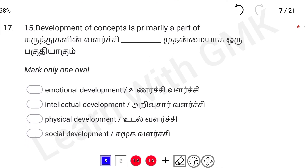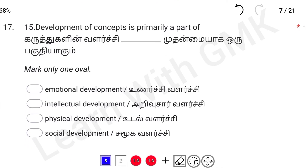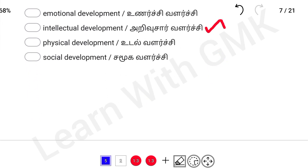Development of concept is primarily a part of what type of development? Concepts are part of cognitive processing. The answer is intellectual or cognitive development. Option B is cognitive development — our brain processes concepts, so this relates to intellectual or cognitive development.